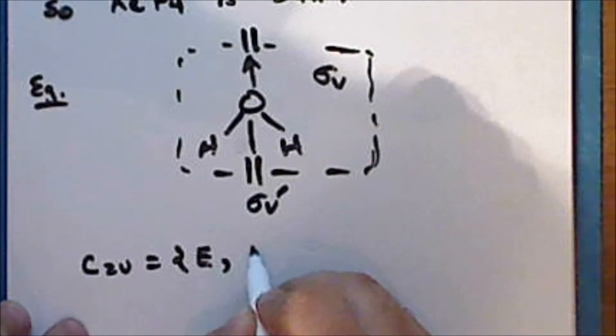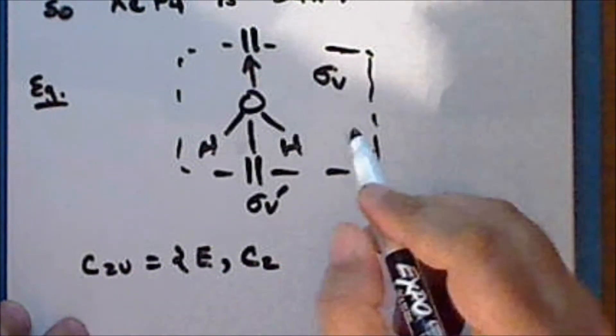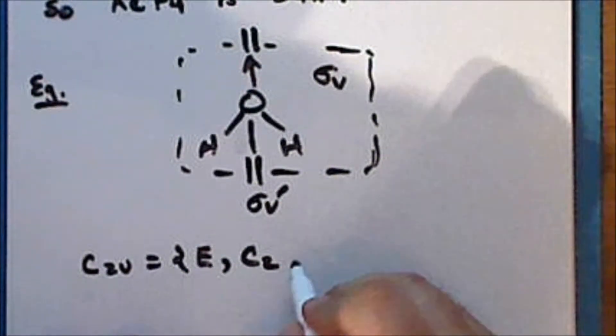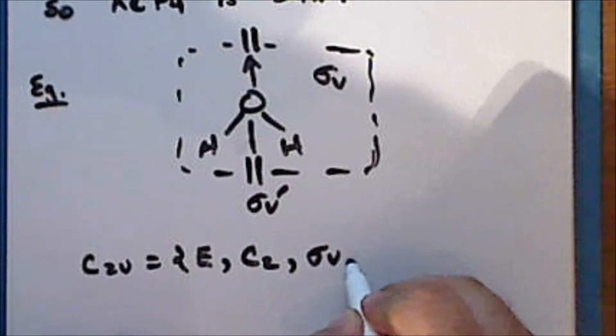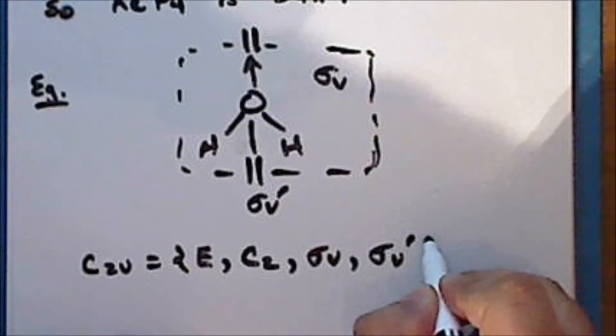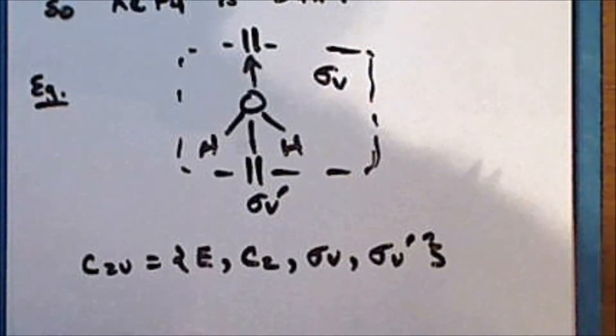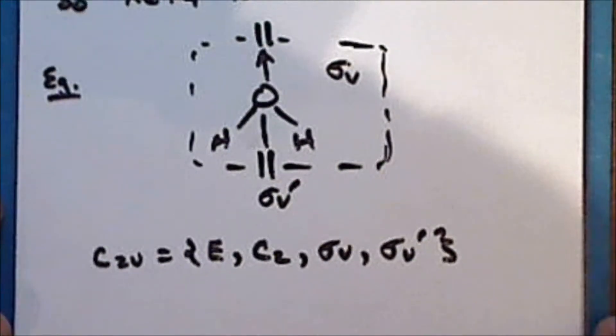So the C2V point group has four elements, the identity, the C2 operation, the sigma V operation, and the sigma V prime operation. Notice that each of these elements are their own inverse.